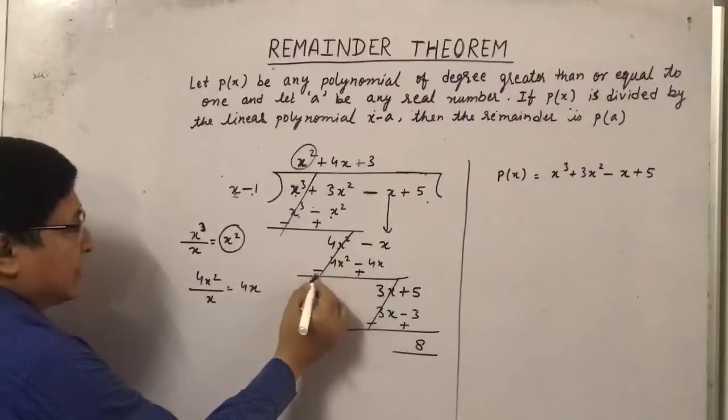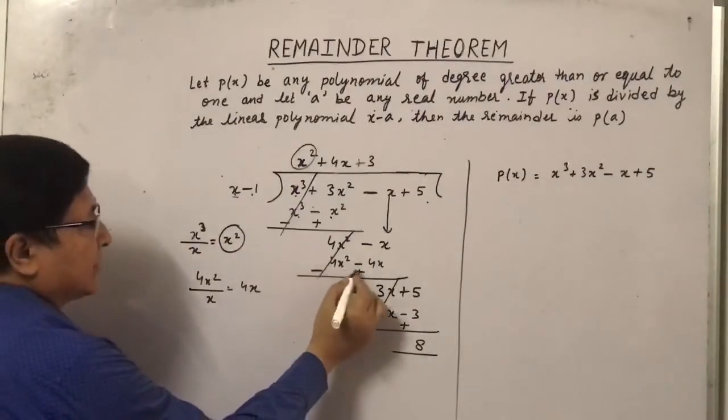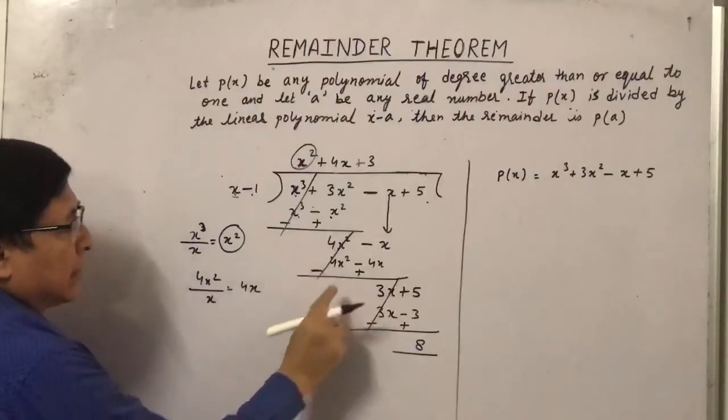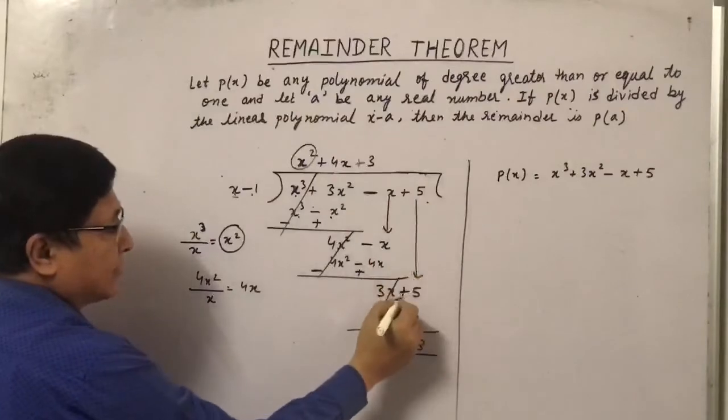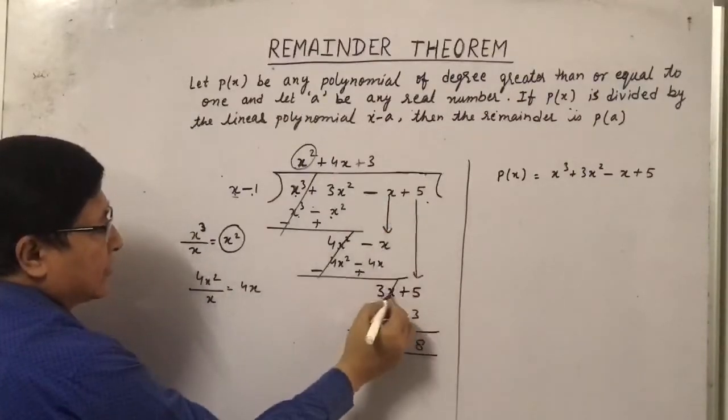So we will subtract it by changing the sign, this will minus, this will become plus, this will cancel. Now 4 x minus x is 3 x. And now we will copy this, that is 5, so it becomes 3 x plus 5.